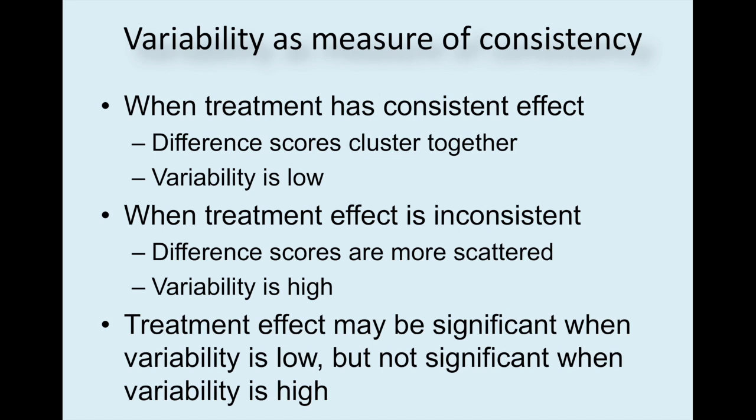Variability is a measure of consistency or how close the scores are to each other. And when the treatment has a consistent effect, means that it works pretty much the same for every person, the difference in scores cluster together, and we say that the variability is low. But when the treatment effect is all over the place, it's very inconsistent, we can see that the difference scores are more scattered. Some are really high, some are really low. And then we would say that variability is high. The treatment effect may be significant when variability is low, but not significant when the variability is high.